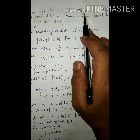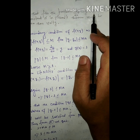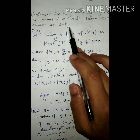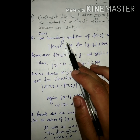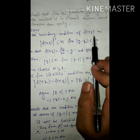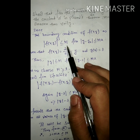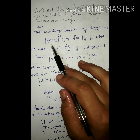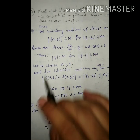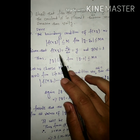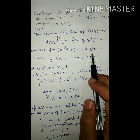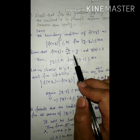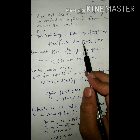For the problem dy/dx = y under the condition y(0) = 1, the constant a in Picard's theorem must be smaller than unity. Since the boundary conditions of f(x,y) require mod of f(x,y) ≤ M and mod of y minus y₀ ≤ M, given f(x,y) = y under condition y(0) = 1, thus f(x,y) = y, that is mod of y ≤ M.